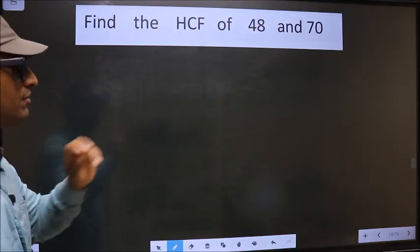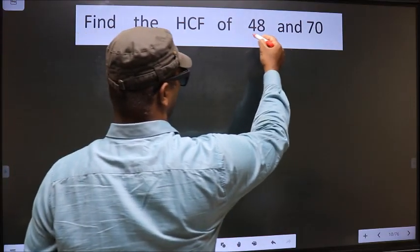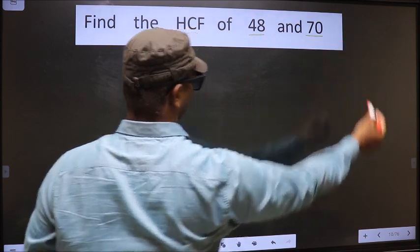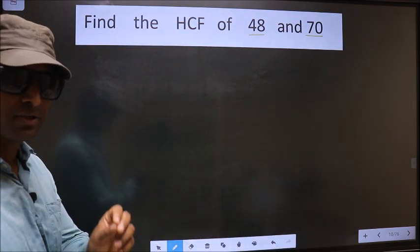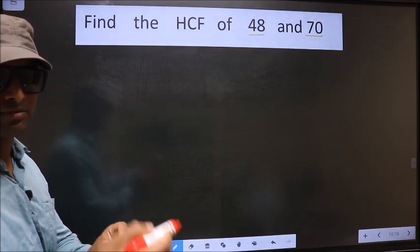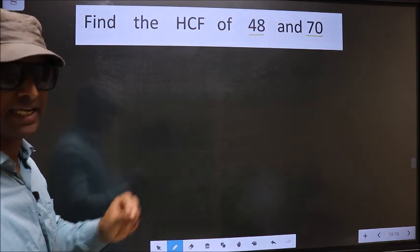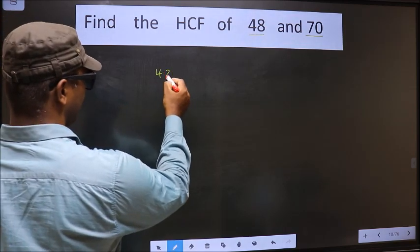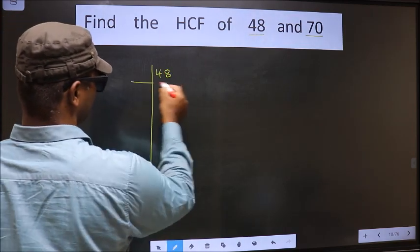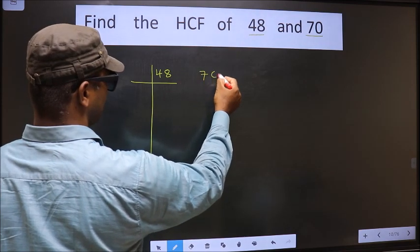Find the HCF of 48 and 70. To find the HCF, first we should do the prime factorization of each number separately. That is, 48 and 70.